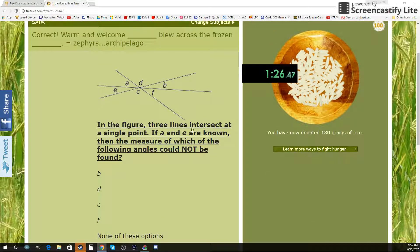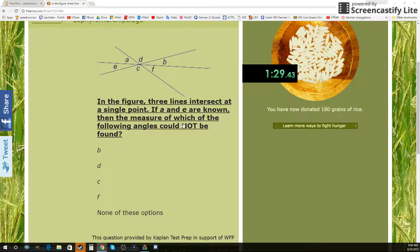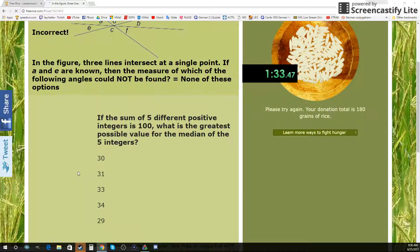Nice. In the figure, 3 lines intersect at a single point. If A and E are known, which of the following angles could not be found? F. Darn it.